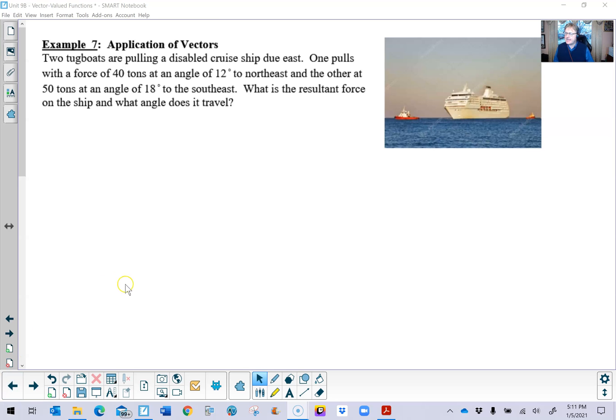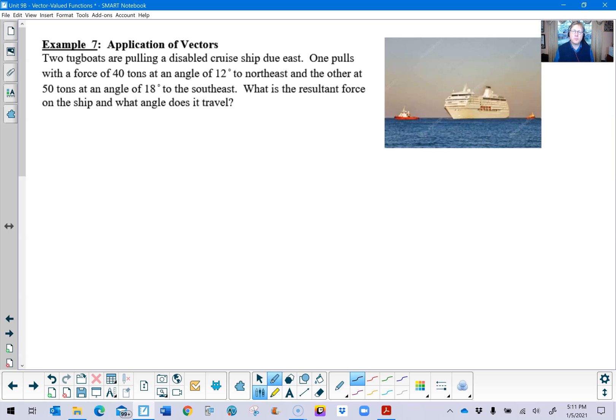What is the resultant force on the ship and what angle does that ship ultimately travel? When we express this angle, let's go ahead and go for a degree setup as we can probably relate to that just a little bit better. One of the ways that you can certainly start this problem is by drawing a picture. It's not 100% required but it can get the ball rolling. So I will try to do the best of my ability to draw this disabled cruise ship.